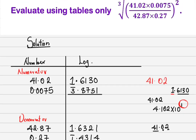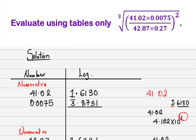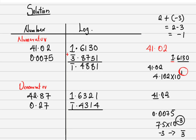Since the numbers in the numerator are multiplying, the simple rule is that when two numbers multiply, their logs are summed. So we add the two logarithms. Adding gives us: 6 plus 8 is 14, write 4 carry 1; then 1 plus the 1 carried is 2; and 2 plus bar 3 (which is minus 3) gives minus 1, written as bar 1. So we have bar 1 point something.